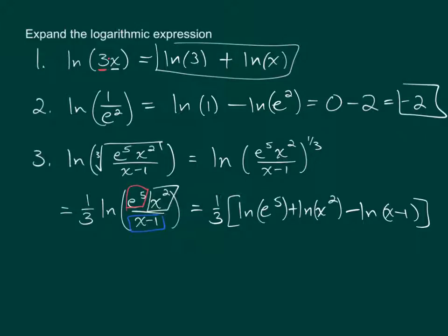So I was able to expand out this log into three separate logs, and since this one-third is being multiplied to this log, it would also be multiplied to the expansion of that log. So now, what I want to do, even before we distribute this one-third, I want to move these exponents on the e and the x to the front.